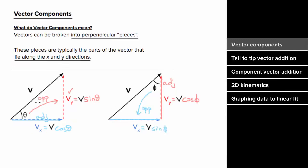So remember, to find the opposite side you use sine, and to find the adjacent side you use cosine.